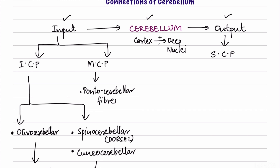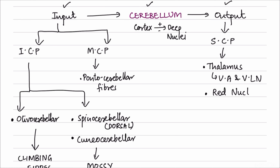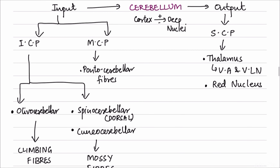Some outputs also pass through the inferior and middle cerebellar peduncles. The two most important motor outputs are: first, to the thalamus - specifically to the ventral anterior and ventral lateral nuclei; and second, to the red nucleus via the cerebellorubal fibers. These two outputs coordinate activity of the cerebral cortex and thereby modulate motor function.